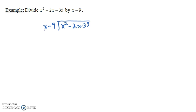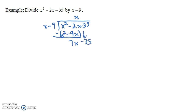Again, the question we ask first is how many times does x go into x squared? Well, it's x times — x times x is x squared. And then x times minus 9 is minus 9x. Remember, we're subtracting here. The x squared minus x squared goes away. We have negative 2x, and really plus 9x, because minus negative 9x. So we get 7x, then we bring down the minus 35. What times x gives you 7x? Well, it's 7.